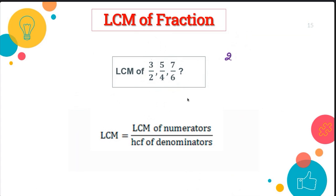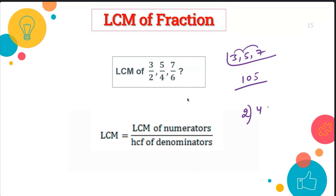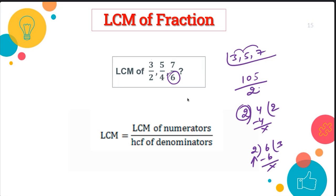Find the LCM of three, five, and seven — you can't find any common divisor, so just multiply: five times three is 15, and 15 times seven is 105. Now find the HCF of two, four, six. Write the smallest value. Two divides four two times and six three times — so the HCF is two. Therefore the answer is 105 divided by two. That is the correct answer.